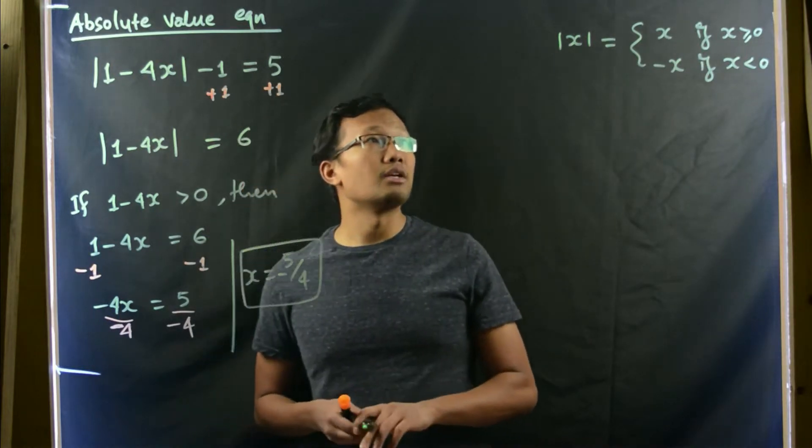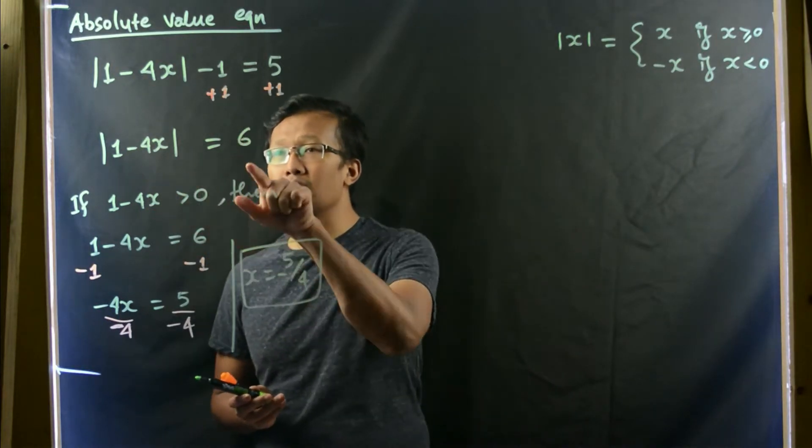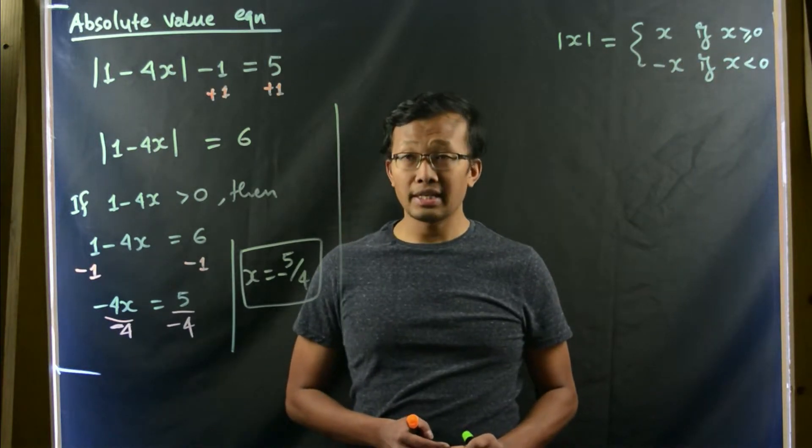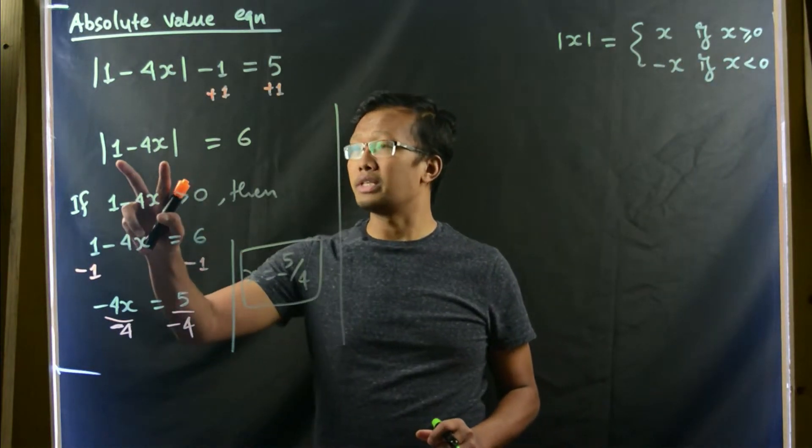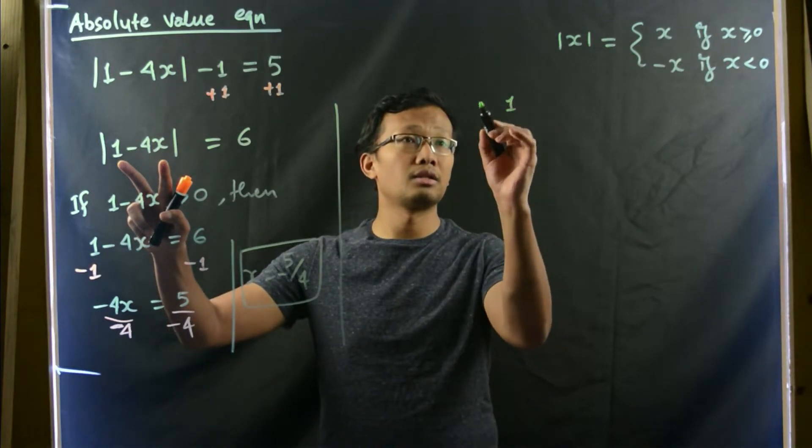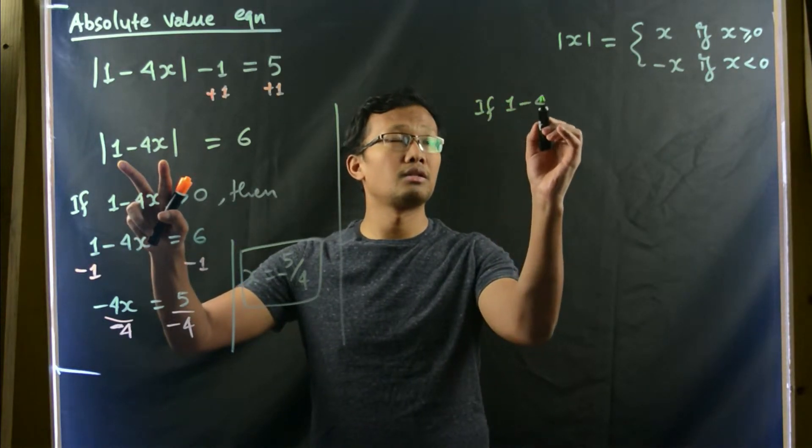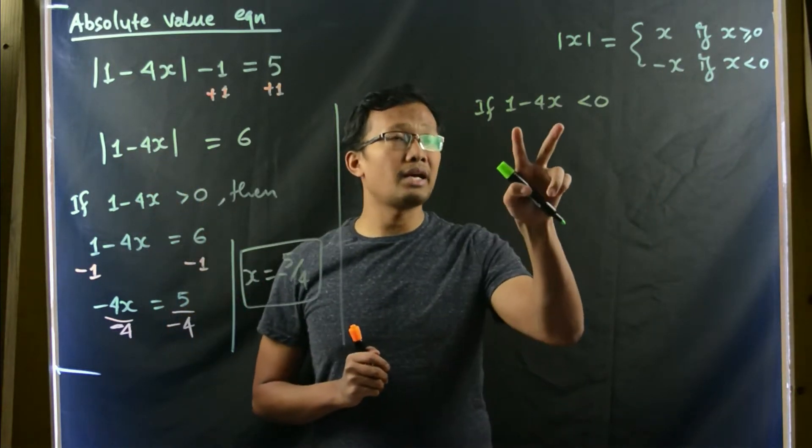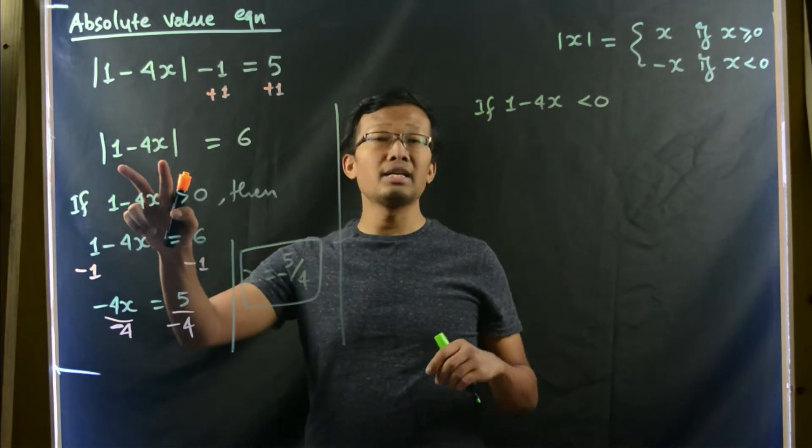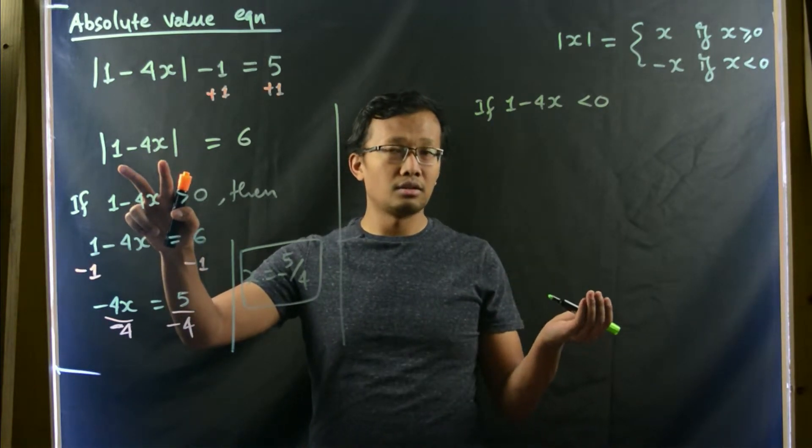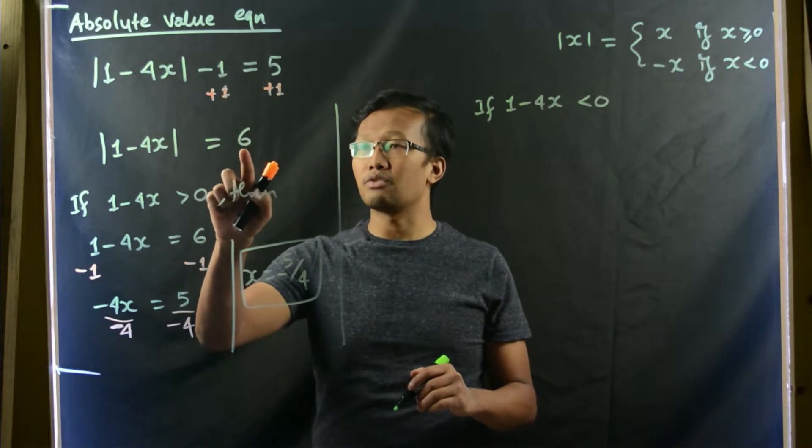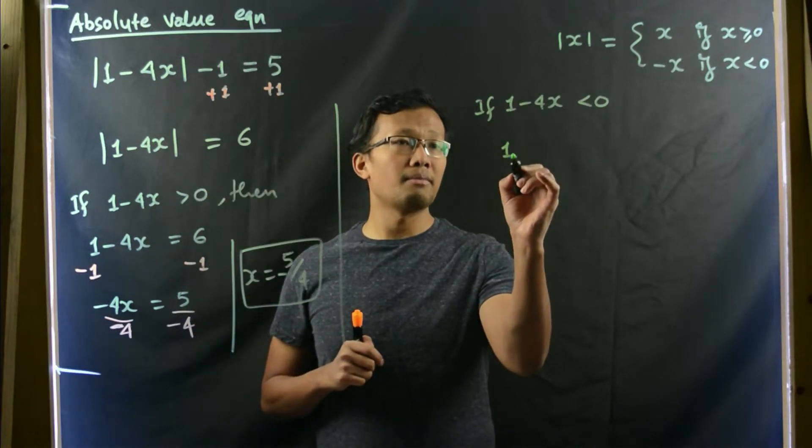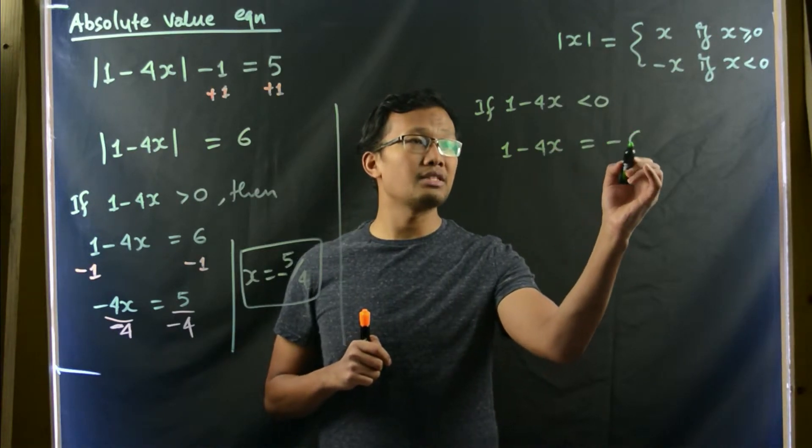Now, for the second definition, if this quantity 1 minus 4x is less than 0, then you multiply this entire quantity by negative 1. Or simply, you can multiply this quantity by negative 1. It's the same thing. So 1 minus 4x would be negative 6. Look how it has changed.